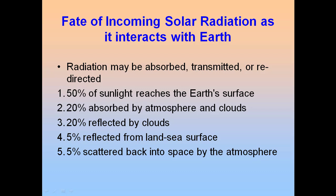20% is absorbed by the atmosphere and the clouds. Another 20% is reflected by clouds. 5% is reflected from land-sea surfaces back out into space, and another 5% is either scattered or backscattered into space by the atmosphere.